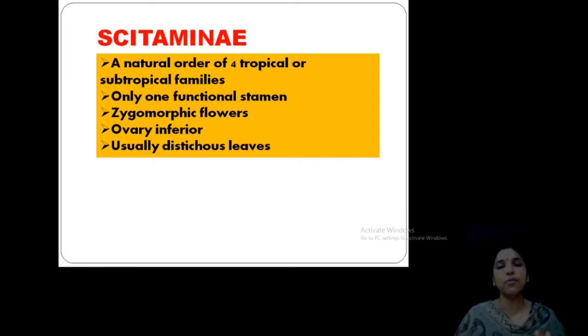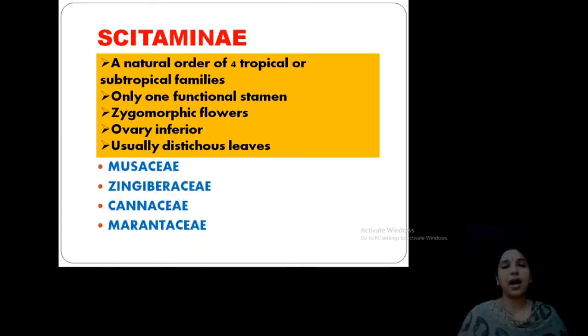This family group is very important and we are studying among them the heading Scitamineae. It includes four tropical and subtropical families. Let us check what are they: Musaceae, Zingiberaceae, Cannaceae, and Marantaceae.